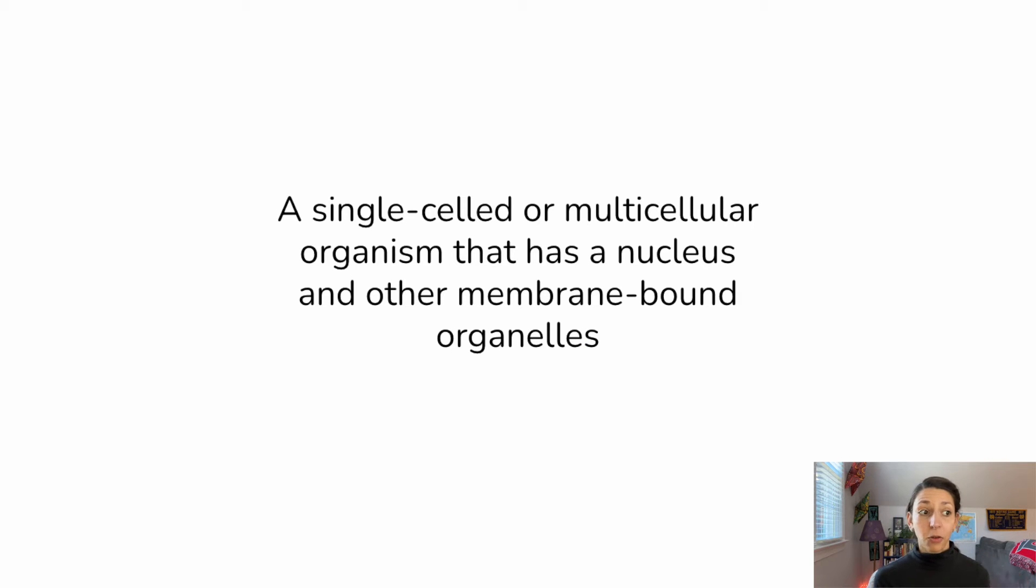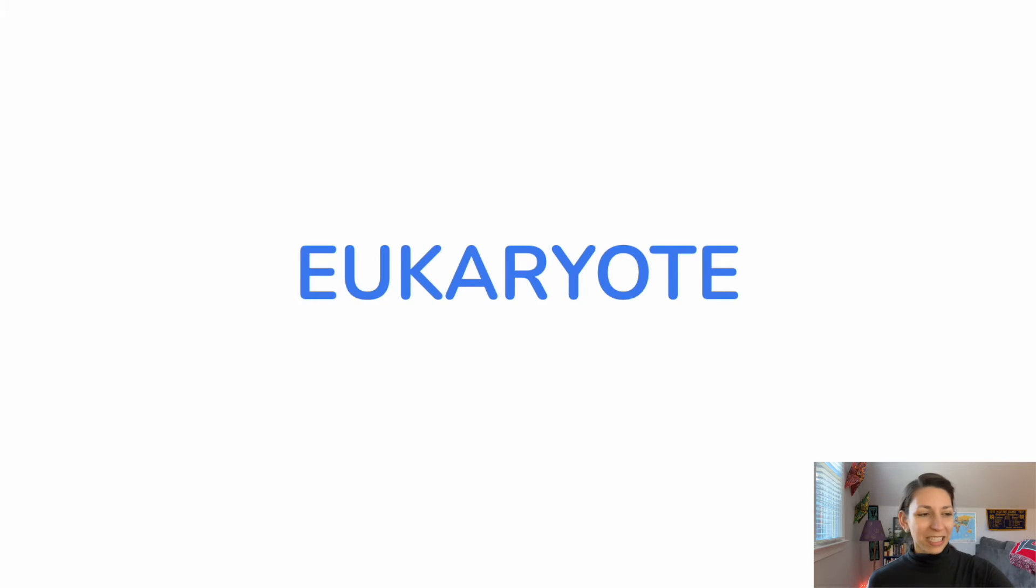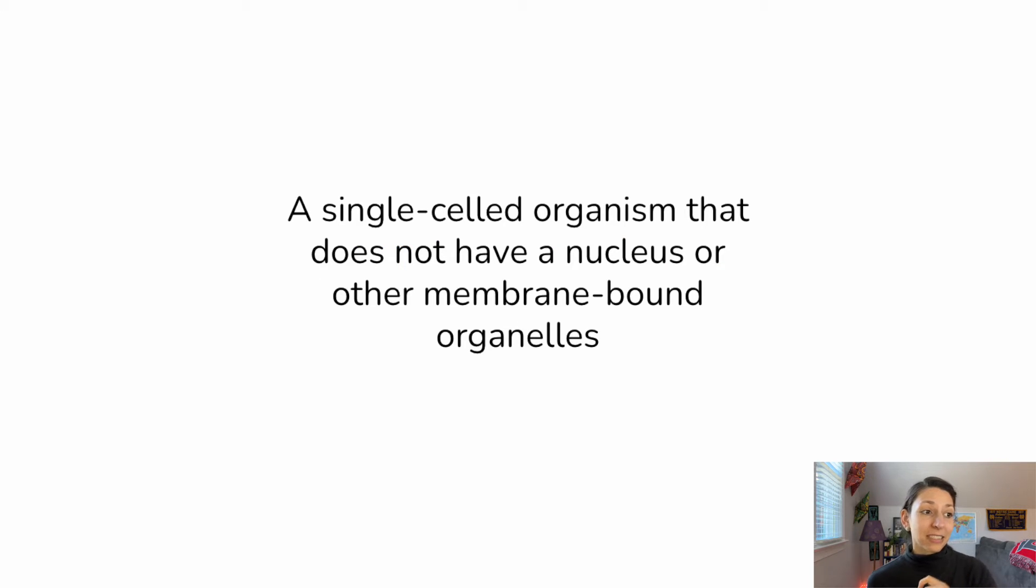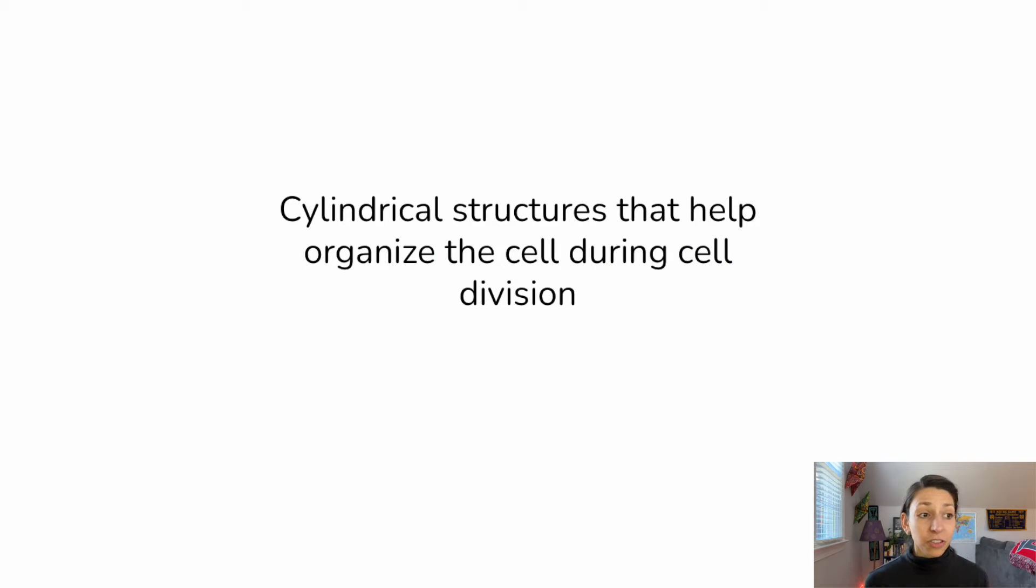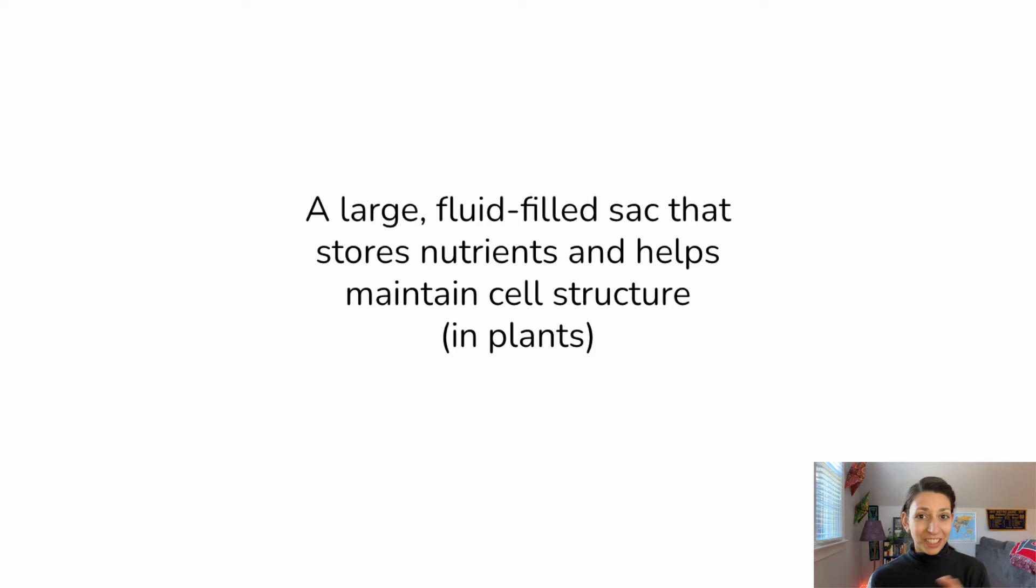A single-celled or multicellular organism that has a nucleus and other membrane-bound organelles. Think you know it? A eukaryote or a eukaryotic organism. A single-celled organism that does not have a nucleus or other membrane-bound organelles. Well, if it's not a eukaryote, it's a prokaryote. These are cylindrical structures that help organize the cell during cell division. We actually didn't cover this in our overview, so let's see if you remember it from your biology class. Centrioles. We'll talk more about these when we get to our day on cell division.